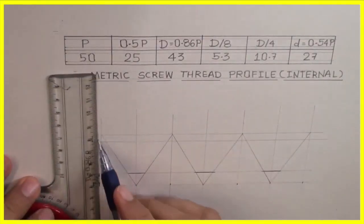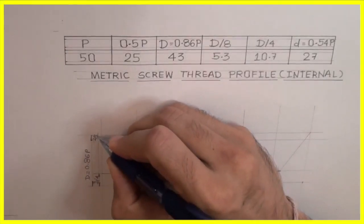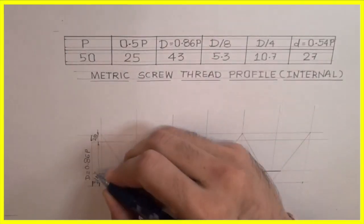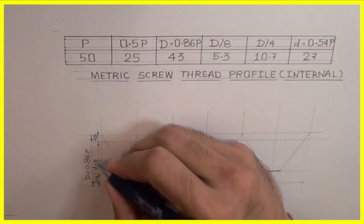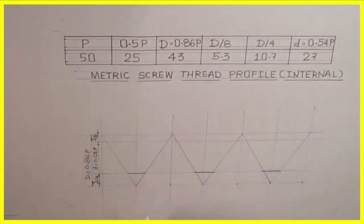We can do the dimensioning d by 8 and the small d would be 0.54p. So that also I can write. Now, after that.